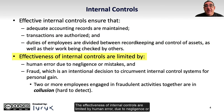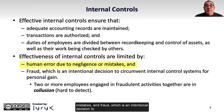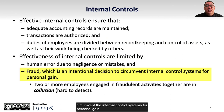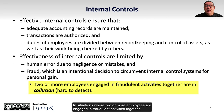The effectiveness of internal controls are limited by human error due to negligence or mistakes, and fraud, which is an intentional decision to circumvent the internal control systems for personal gain. In situations where two or more employees are engaged in fraudulent activities together, they're said to be in collusion, and that's actually hard to detect.